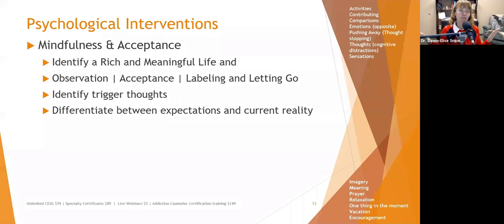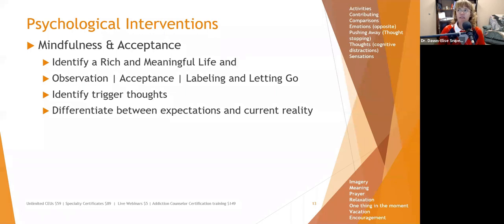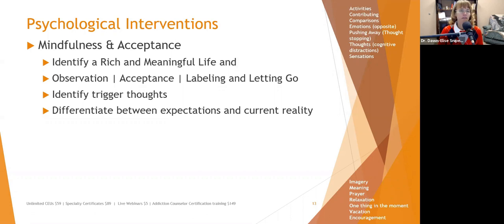These are interventions to help people deal with distress when you can't change what's going on — for the person with a cancer diagnosis, you may not be able to change it right now. Until chemo runs its cycle, you may not have any answers. So what can you do in the meantime other than perseverating and worrying? This is where activities, contributing, comparisons, thought stopping, cognitive distractions, and sensations come in handy.